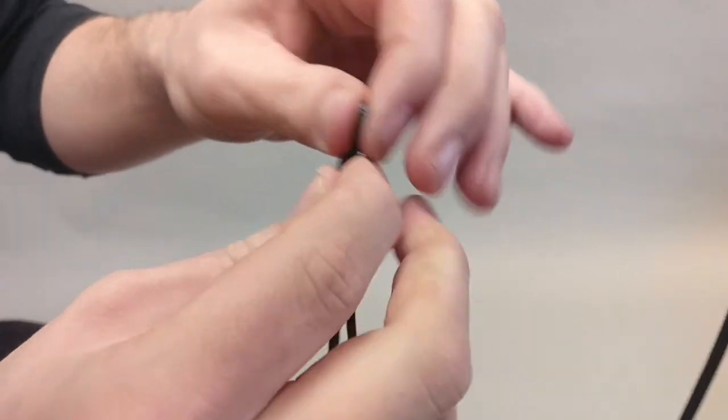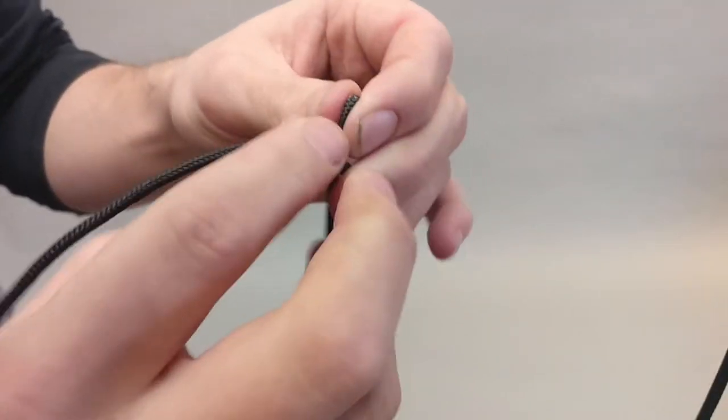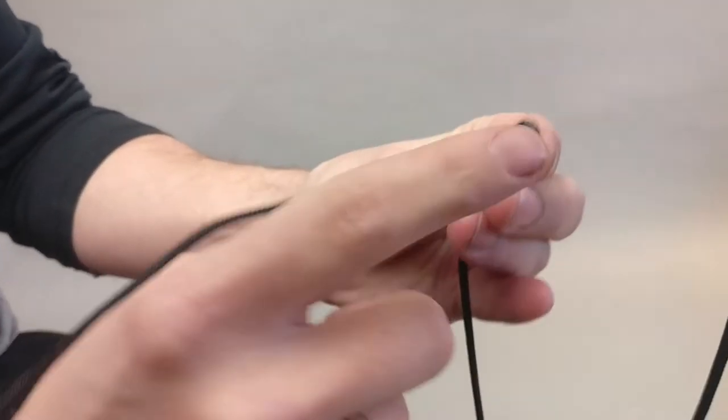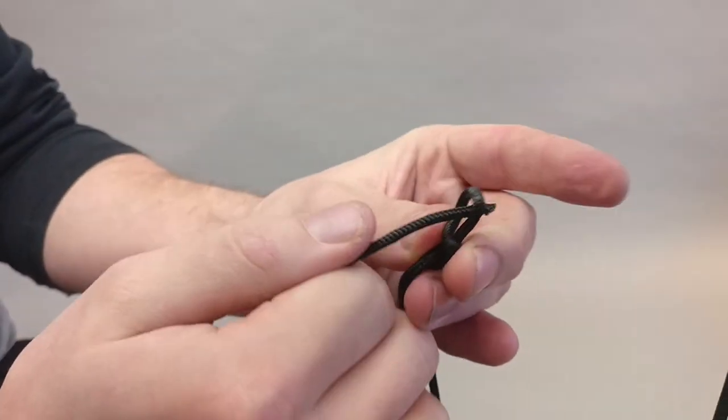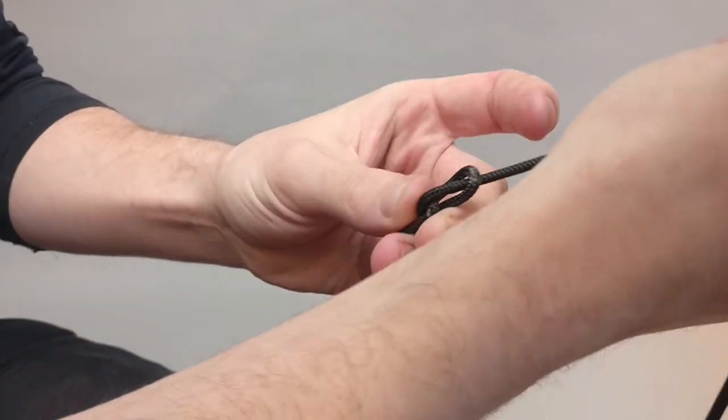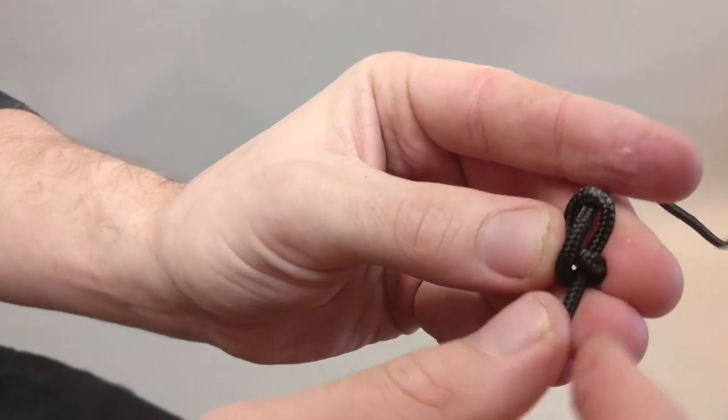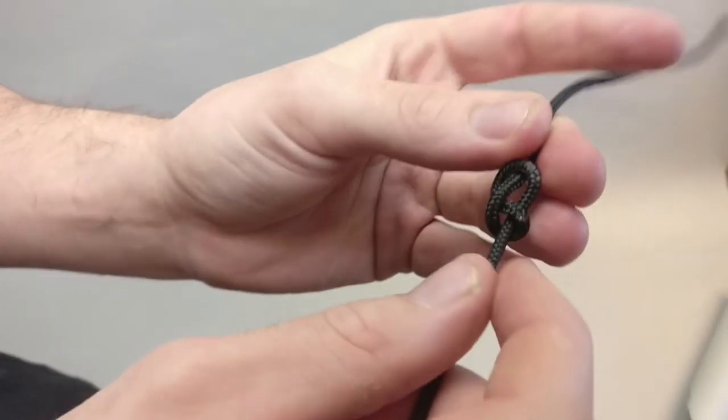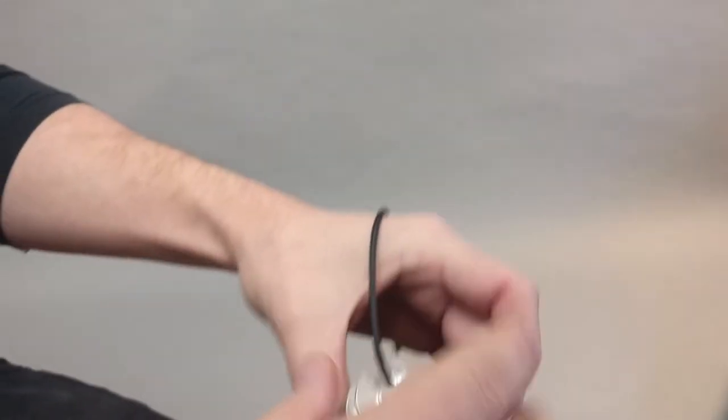And you make what we call the figure-eight knot—so around and then through. It should look something like this with the marking right there.